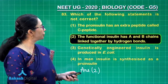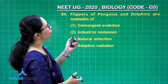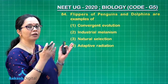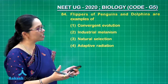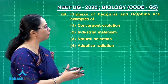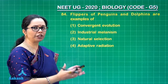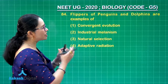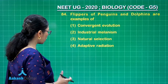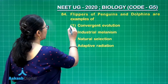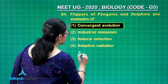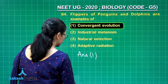Moving on to question number 84: flippers of penguin and dolphin are examples of? This is a classic question — penguin is a bird and dolphin is a mammal. Both of them have evolved unrelated to each other but have similar phenotypes, meaning they have been subjected to the same type of selection pressures. When such a thing happens in organisms of different lineages, this is called convergent evolution. So option 1 — convergent evolution — is the correct answer.